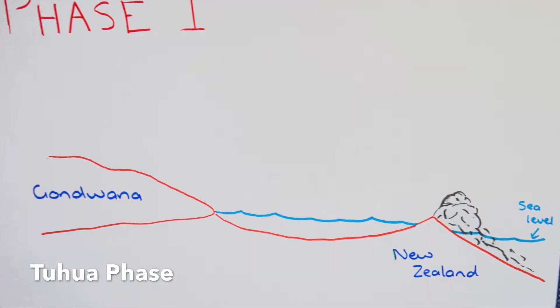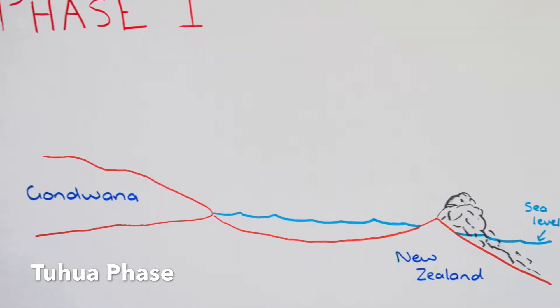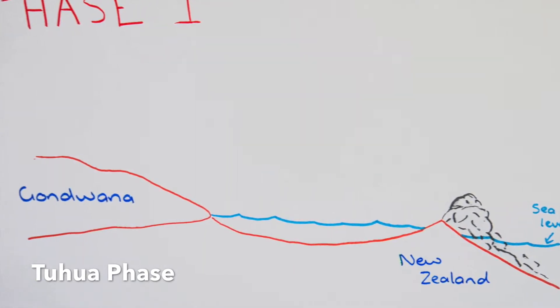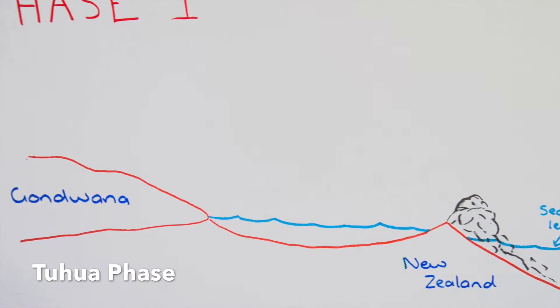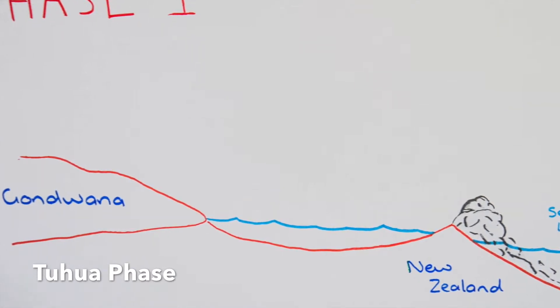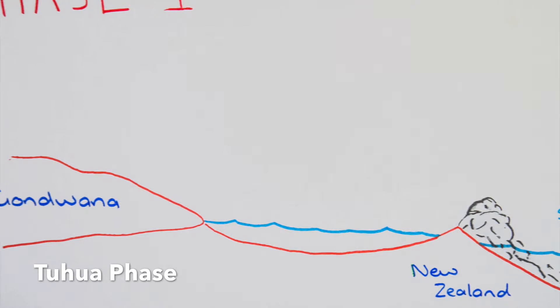The first phase, which started 600 million years ago, was the Tahua sedimentation. This was when the New Zealand landmass was off the coast of Gondwana and the area of New Zealand was pushed below sea level.